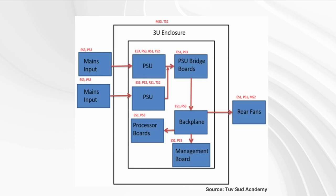It's very useful when designing a new product to have a block diagram like this and to think about energy levels. Here you can see ES3 — mains input is always ES3. You also see PS, which is for flammability, thermal, etc. You need to think of different types of energy, not just electrical energy.